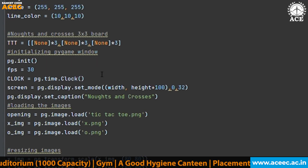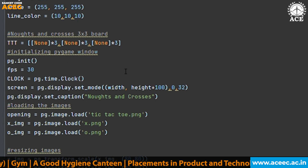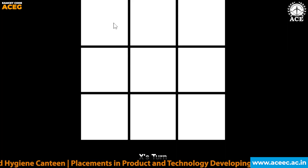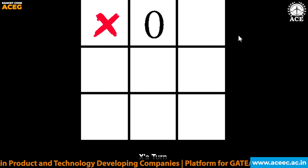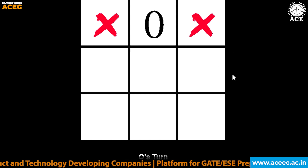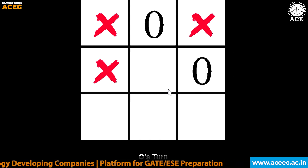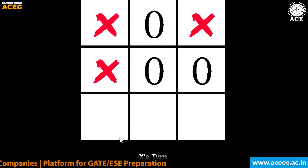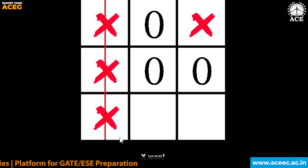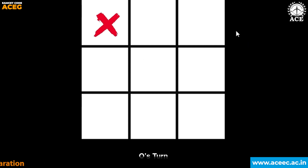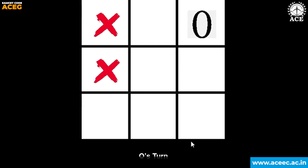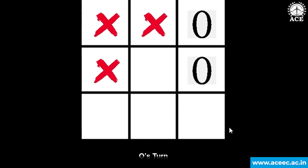We have created a window and resized the images to the required size. The X and O images are loaded accordingly. The player who satisfies a winning condition first will be declared the winner. In the first case, X is declared as the winner. In the second case, O is the winner.